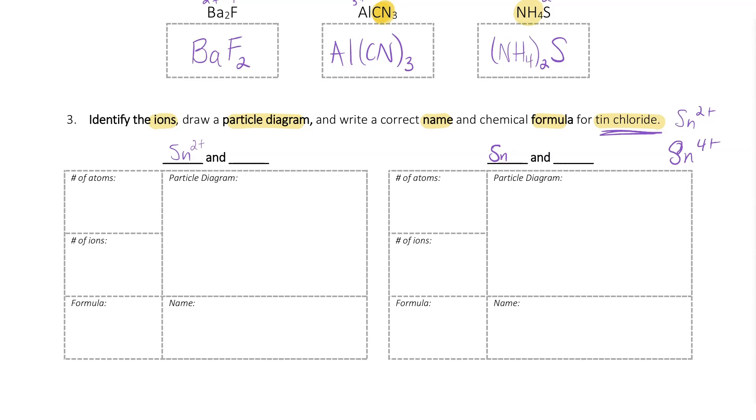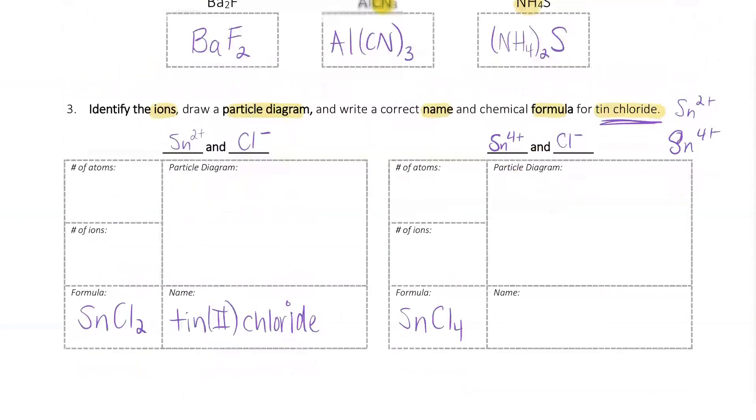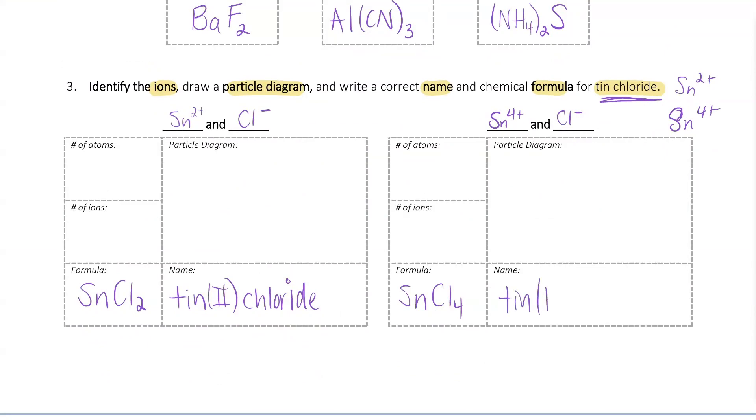So I'm going to start out with writing my ions. That one needs to be plus 4. Those are our two different versions of tin. And then our chlorine is going to be, our chloride is going to be a Cl minus. Now, I'm going to do this kind of out of order. I'm going to go ahead and write my chemical formula and my name before I do my particle diagram, number of atoms, and number of ions. So if tin is plus 2 and Cl is minus 1, I need two of those minus charges to balance that out to make it neutral. This is going to be my tin 2 chloride. Same thing for my other form, but instead of having a plus 2, I've got a plus 4, which means I need twice as many chlorines. That's going to be SnCl4. And so this is going to be tin 4 chloride.